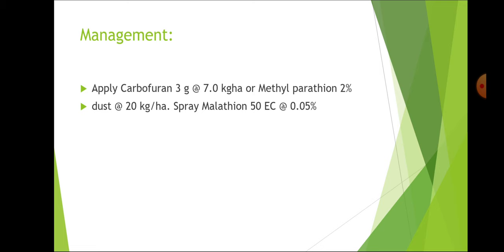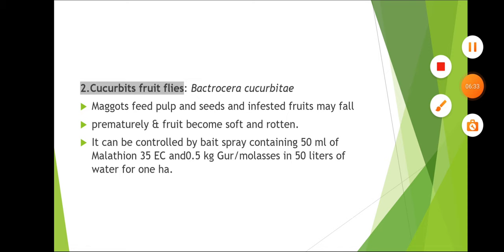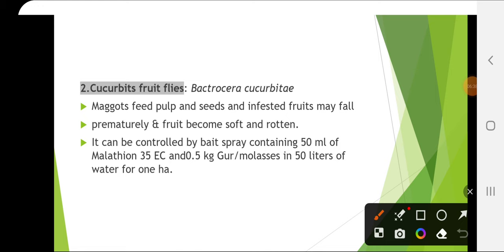Cucurbit fruit fly is a very important pest affecting all cucurbits. The maggots feed on the pulp and seeds, and infested fruits may fall prematurely and become soft and rotten. It can be controlled by bait spray containing 50 ml of Malathion 35 EC and 0.5 kg of molasses in 50 litres of water per hectare.